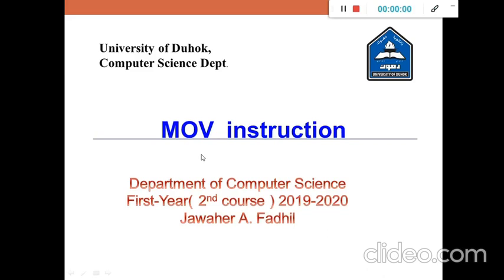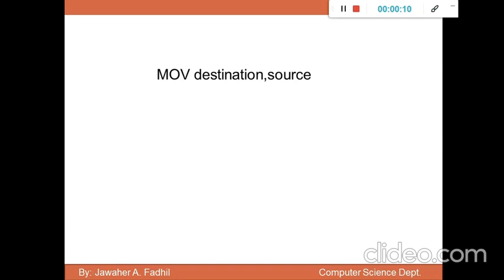Welcome to this presentation about MOV instruction in assembly programming. The MOV instruction is used to copy data from one location to another inside the CPU. The format of this instruction is MOV destination, source. The source operand will copy the data to the destination operand by using MOV instruction.